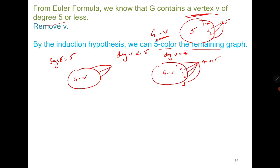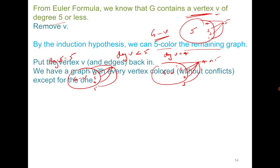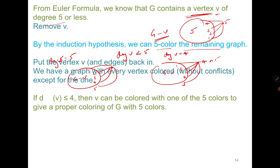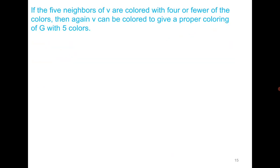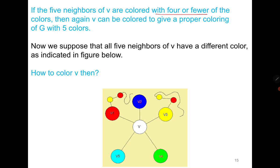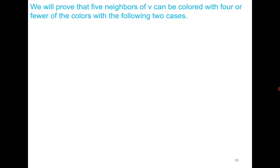In the hard case, g minus v has 5 neighbors of v colored with all five colors, and we cannot introduce a sixth color. We must color v with one of the existing five colors. This is the only case that needs further discussion. If degree is at most 4, no problem. If degree is 5 but neighbors use 4 or fewer colors, no problem. We only need to handle the case where all five neighbors use all five distinct colors. To prove this we consider two sub-cases.